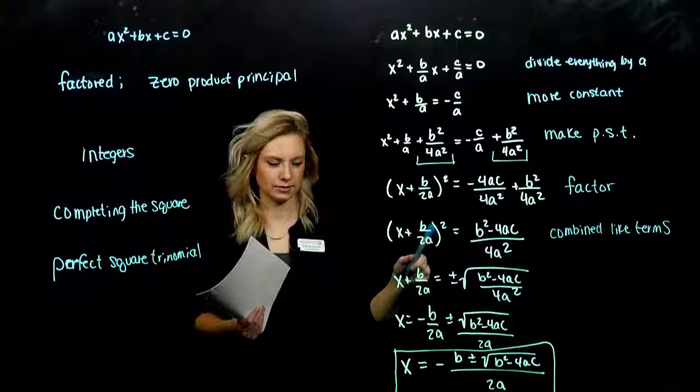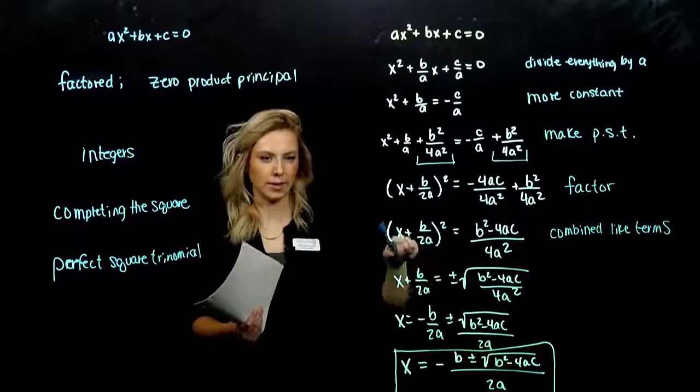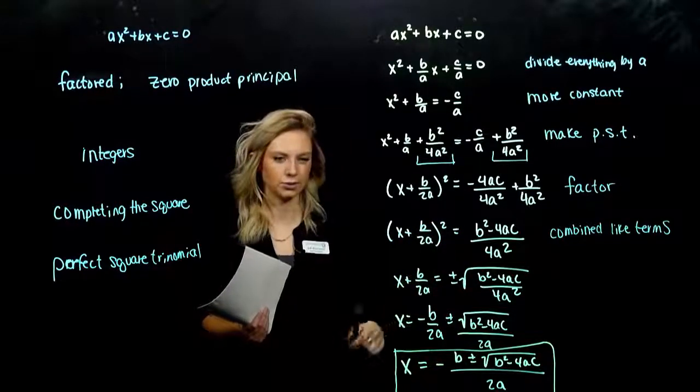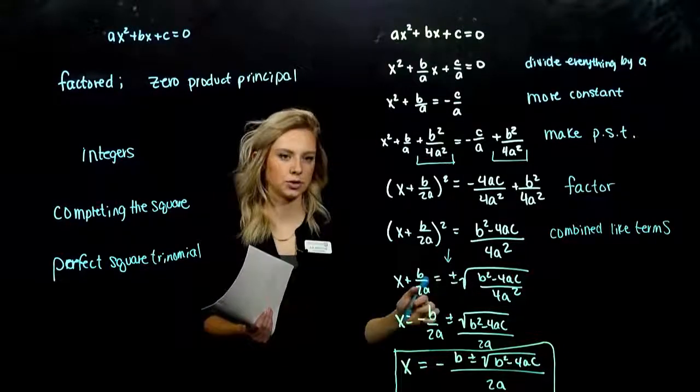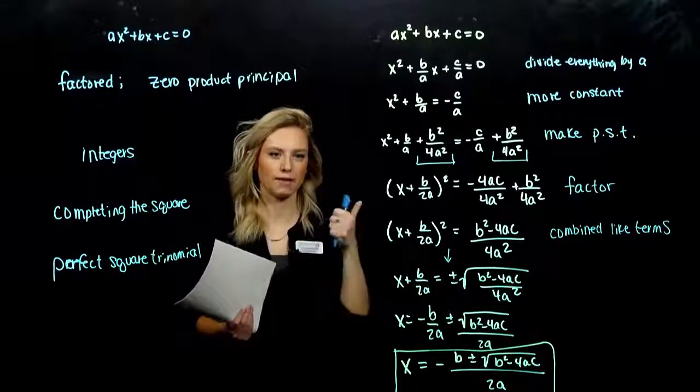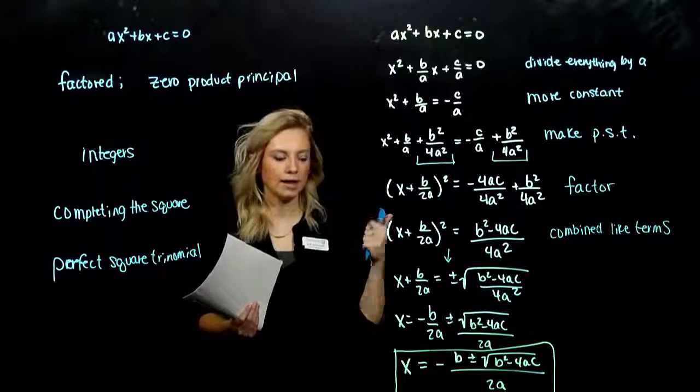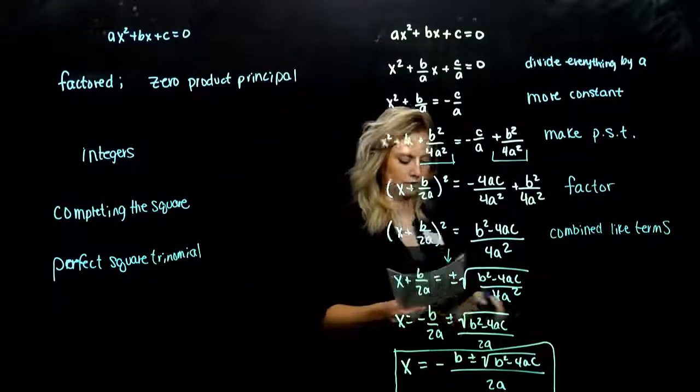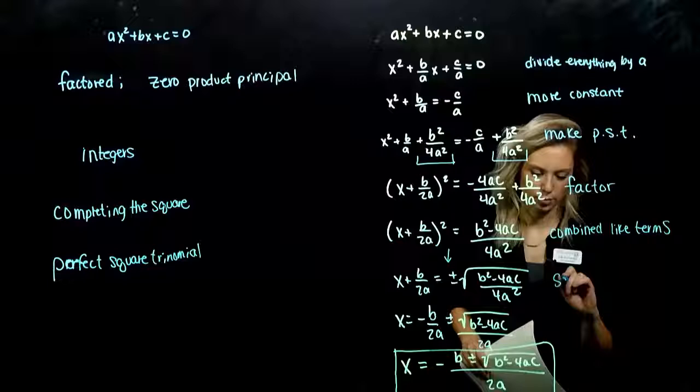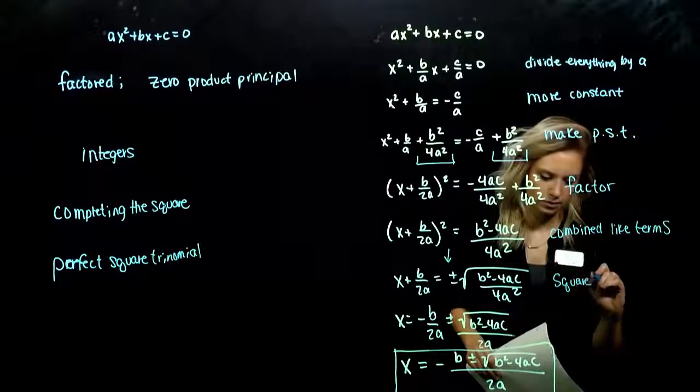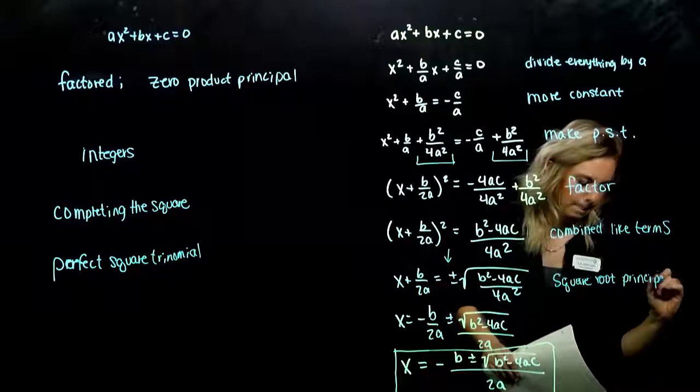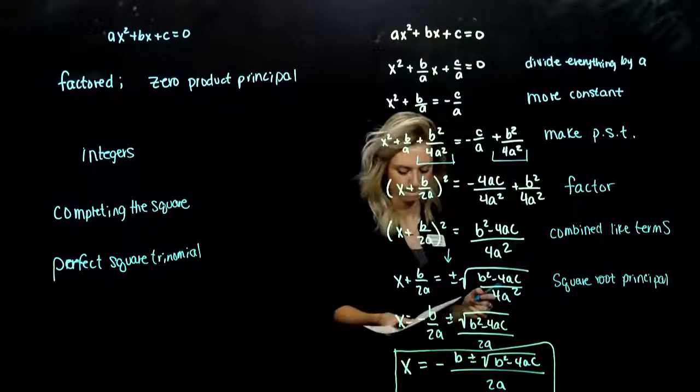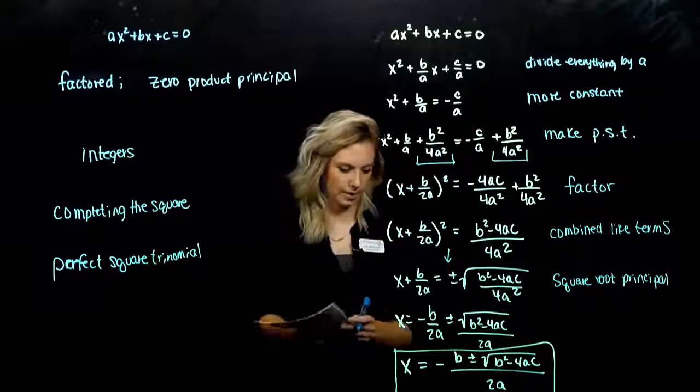Then what? We need to dig out the x. And right now, it's buried underneath that power of 2. So if we take the square root of both sides, we introduce two different options. Because I both have a positive radical and a negative radical option. So we took, we used that square root principle.